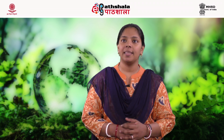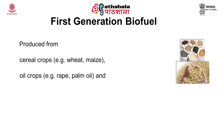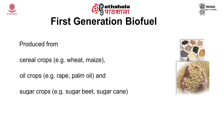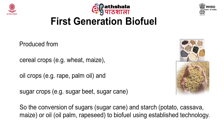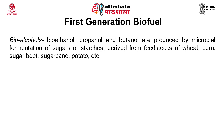Let us see first generation biofuel in detail. It is produced from cereal crops like wheat and maize, oil crops like rapeseed and palm oil, and sugar crops like sugar beet and sugar cane. The conversion of sugar cane, potato, and cassava to biofuel using established technology comes under first generation biofuel. Examples include bio-alcohols such as bioethanol, propanol, and butanol, produced by microbial fermentation of sugar or starch derived from feedstocks of wheat, corn, sugar beet, etc.